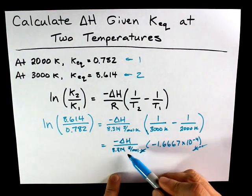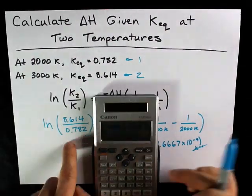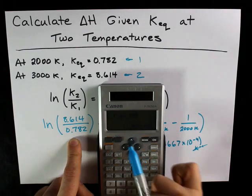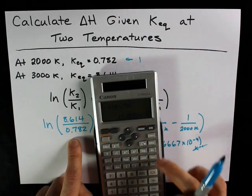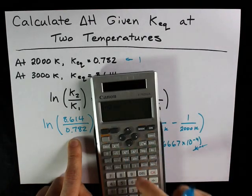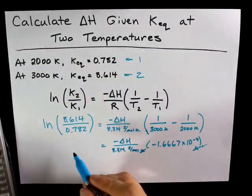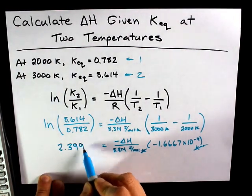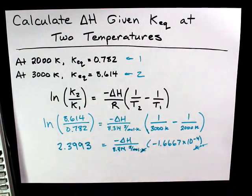And that's going to leave my delta H with units of joules per mole. Let's do the natural logarithm stuff on the other side. 8.614 divided by 0.782 is 11.02. And then I can take the natural logarithm, the ln, of that number. That gives me 2.399. I am going to carry one more decimal place because I like that. I like not rounding significant figures until the very end.